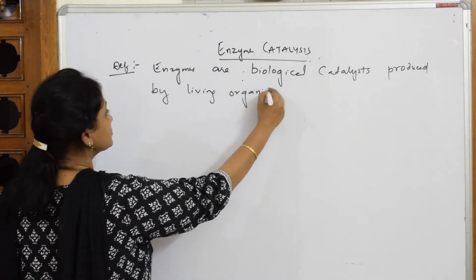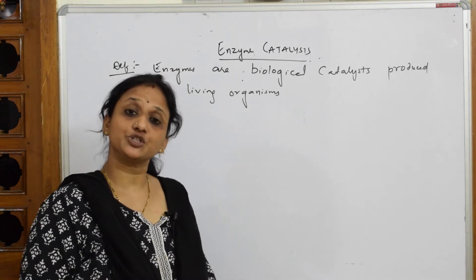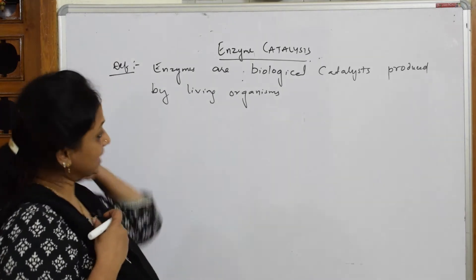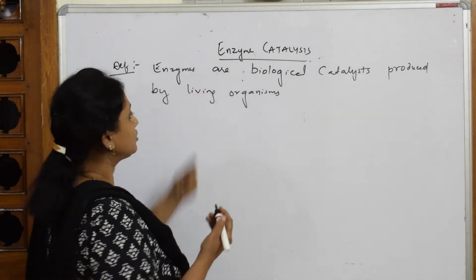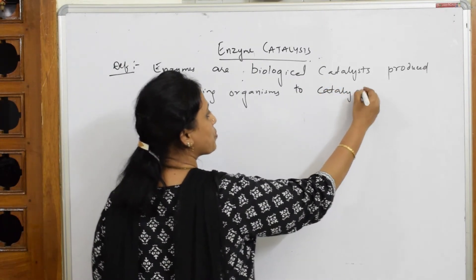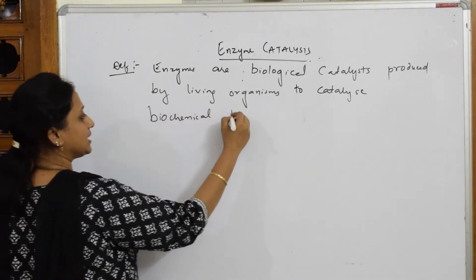So why are these producing, why are the living organisms producing the enzymes? To catalyze biochemical reactions. Simple, isn't it? The reactions which happen in the body. So to catalyze those reactions they are going to produce these enzymes. So by living organisms to catalyze biochemical reactions.